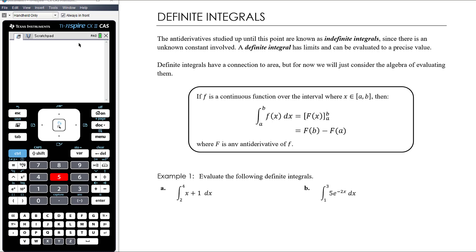Anti-derivatives that we've looked at up until this point are known as indefinite integrals, since we have an unknown constant. So we don't get a definite answer — we get an answer that still has an unknown in it. So it's an indefinite answer.